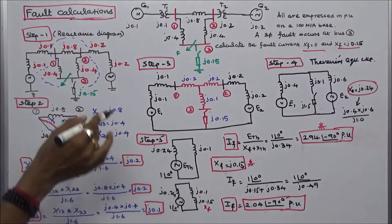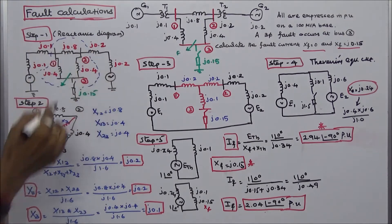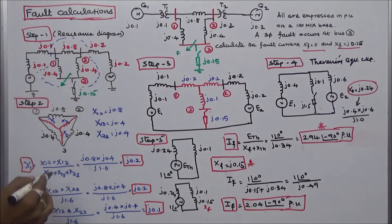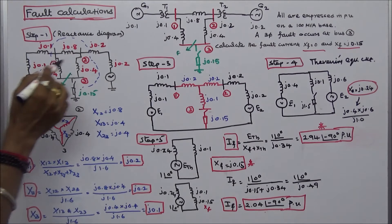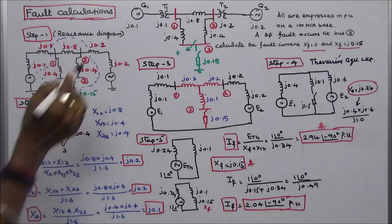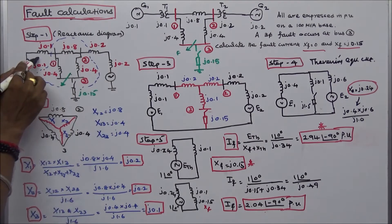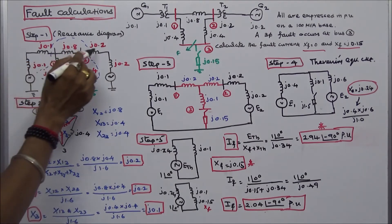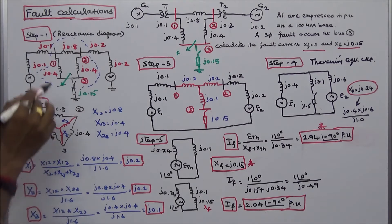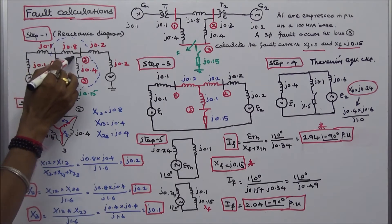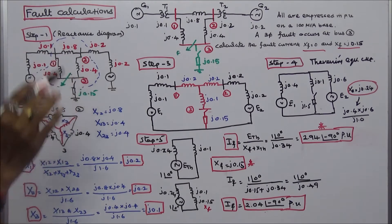First step, we have to draw the reactance diagram. This shows generator reactance J.1 and J.2, transformer reactance J.1 and J.2, and the branch impedances J.8, J.4, and J.4.